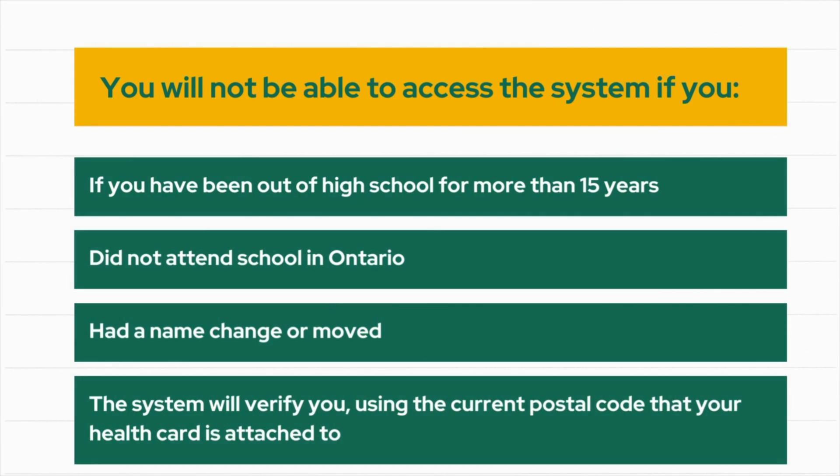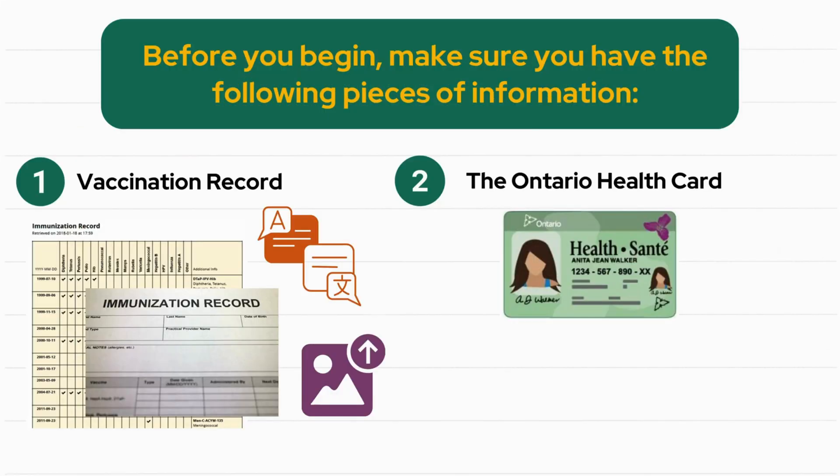If you have been out of high school for more than 15 years, you do not attend school in Ontario, or you had a name change or a move, the system may not work for you. The system will verify you using your current postal code that your health card is attached to. Have your card with you as you will be asked for the numbers on the back of the card for verification.